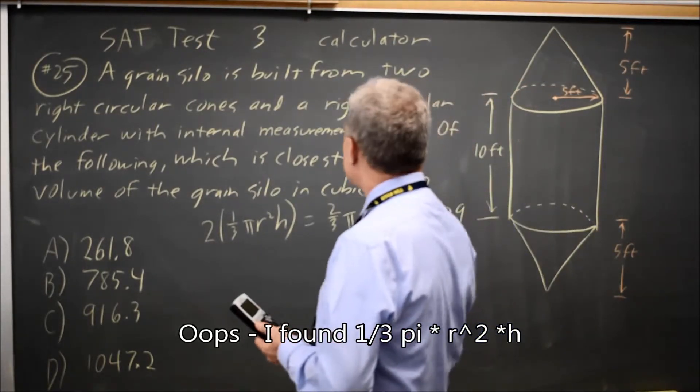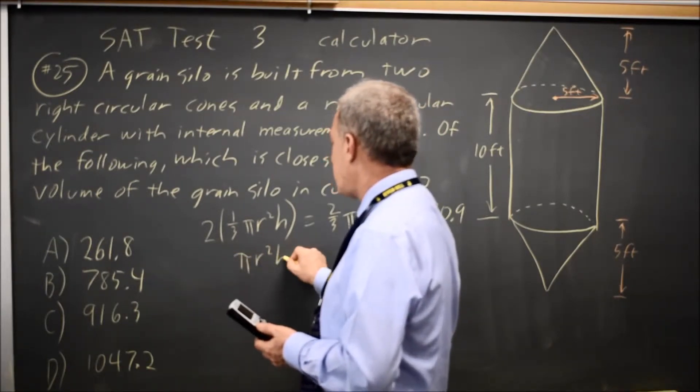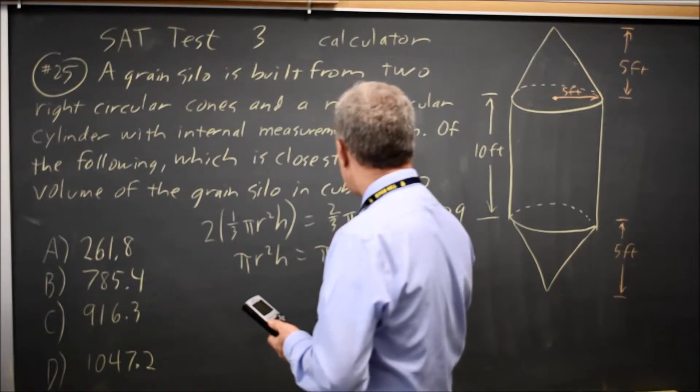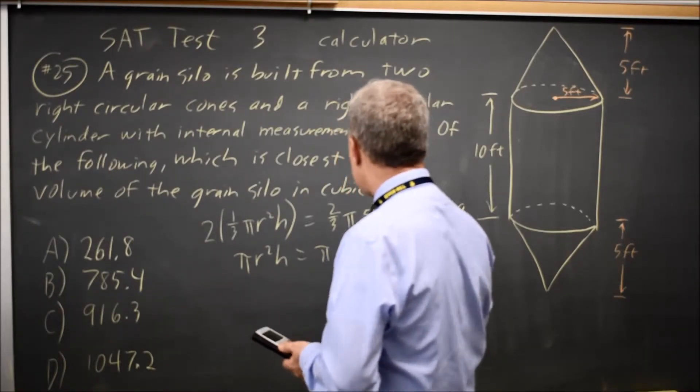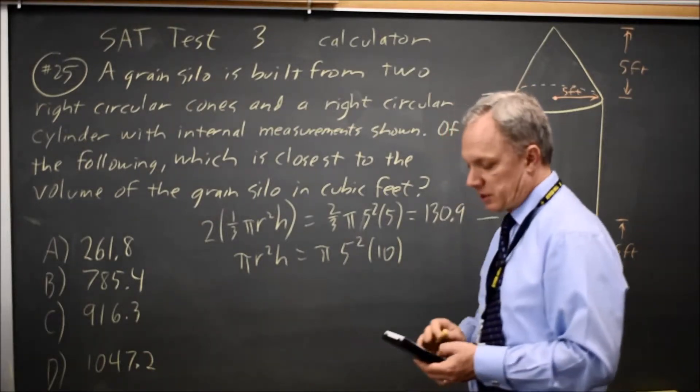And then we have one right circular cylinder, which is π r² h. That's π, r is still 5, so 5² times h, which is 10 according to the diagram for the cylinder.